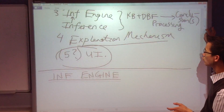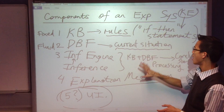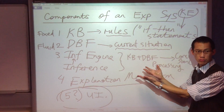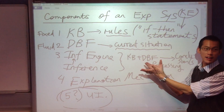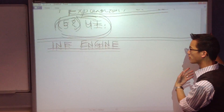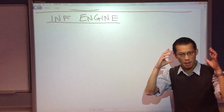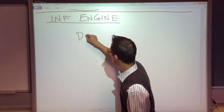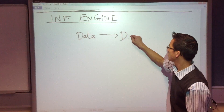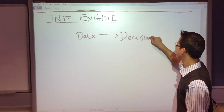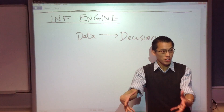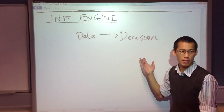Generally speaking, when you think about how all of this works, you have information, you have rules, and then out of that you draw a conclusion. So we sort of have this general pattern. There's data, and that leads to a decision. You think about what you know, and then you make a choice based on that.